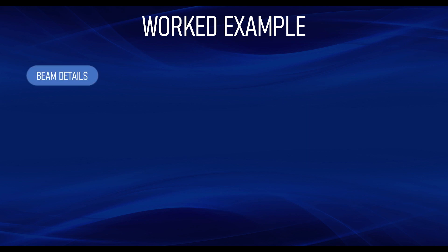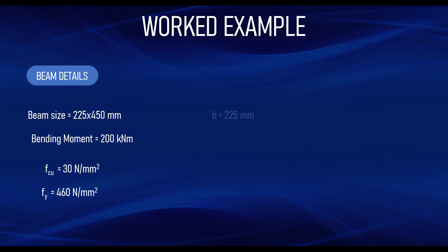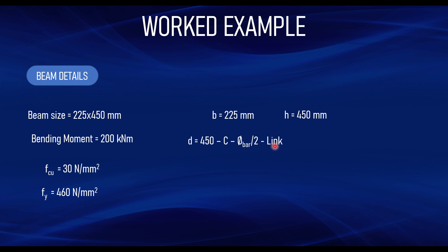Back to the worked example. Let's look at a beam. Our beam size is 225 mm by 450 mm. Assuming a bending moment of 200 kNm is exerted on it, fcu is 30 and fy is 460. We now need to determine d and d'. From the given parameters, b equals 225 mm and the height of the beam is 450 mm. The effective depth d equals height minus cover minus half diameter of bar minus shear links.